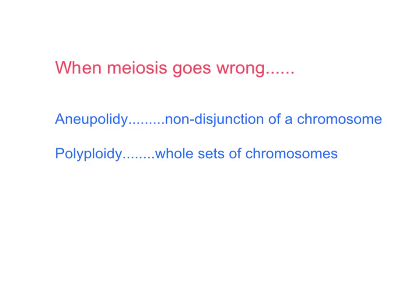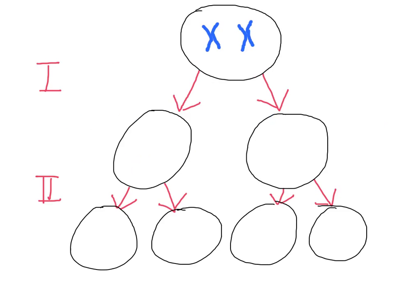So first off, this is basically showing two divisions of meiosis. This being our first reduction division and this being our second division of meiosis, the mitotic division.